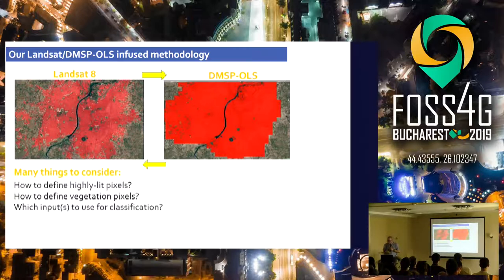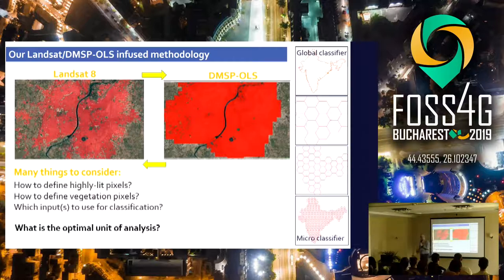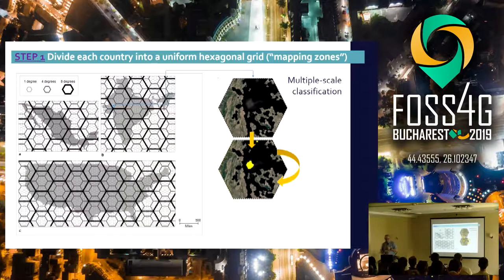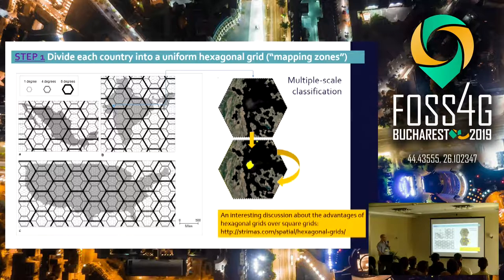But there are many things to consider: how do we define highly lit pixels? How do we define vegetation pixels? Which inputs do we use for the classifier? What is better — a global classifier that can be generalized, or many small classifiers that are very specific to specific areas? So we divided each country — India, Mexico, and the US — into hexagons, and we treated each hexagon as an independent unit of analysis. Using hexagons for analysis has very interesting advantages.